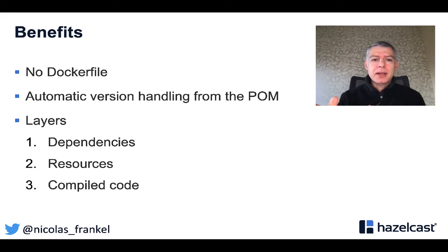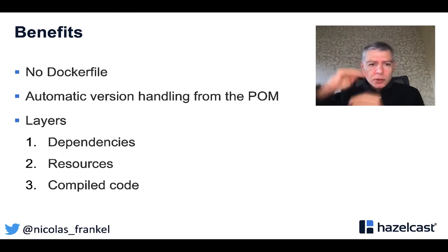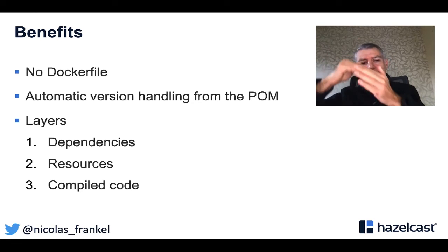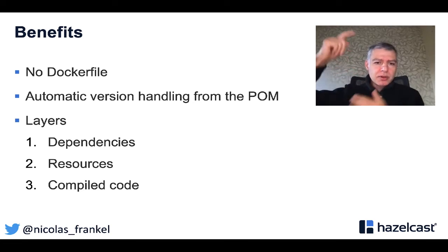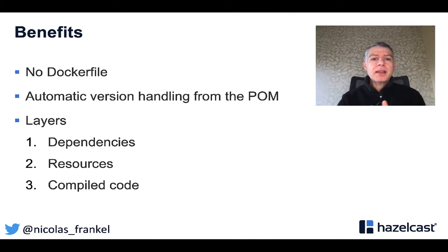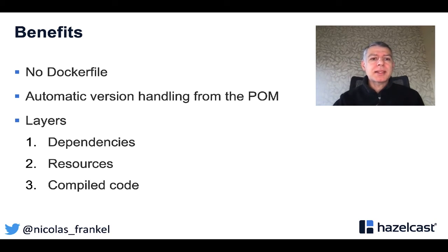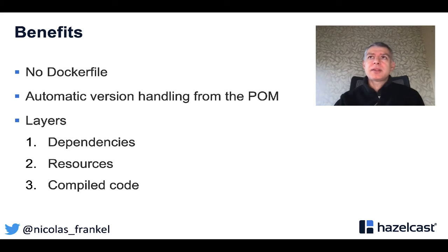The first benefit is there is no Dockerfile, because probably all your Java Dockerfiles look the same — no use repeating them over and over. The second benefit is automated versioning from the POM: if your POM is version X, Jib knows it will create version X of the Docker image. Then there are different layers: dependencies, resources, and compiled code. The compiled code is the stuff that changes the most, so there's no need to re-fetch dependencies or re-copy resources if only your code changes. In the latest version, you even have four layers with a dedicated snapshot dependencies layer, since snapshot dependencies are supposed to change more often.